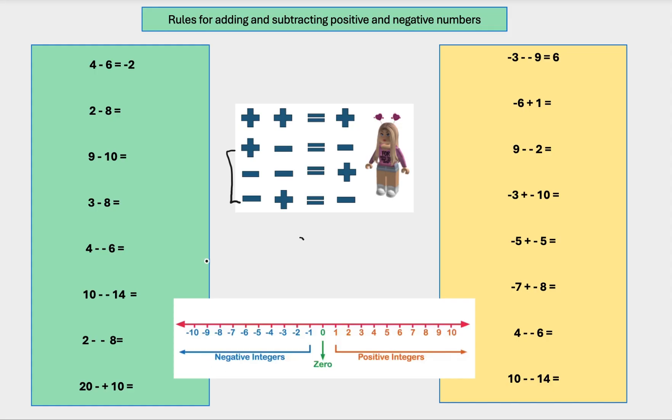So, doing a nice easy one to show you. 4 minus 6 equals minus 2. Let's go to our number line. So it's a plus 4. We're going to start on the plus 4. And it wants us to take away 6. So let's go 1, 2, 3, 4, 5, 6. Minus 2. Because it asked us to take away 6. So we're going down to the negatives.